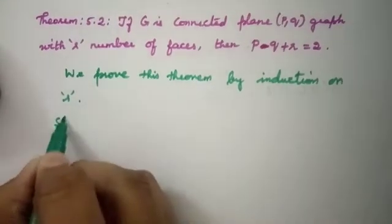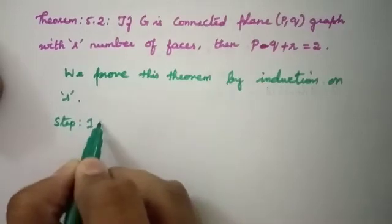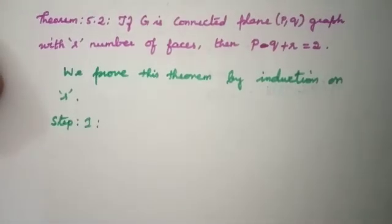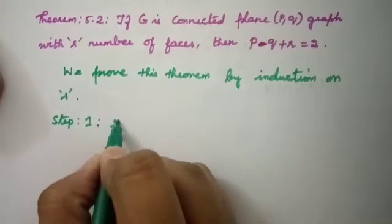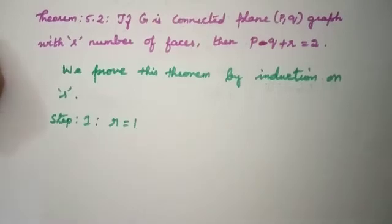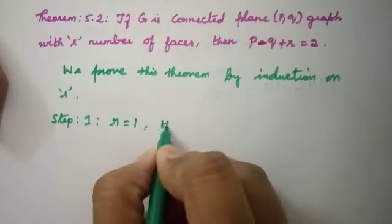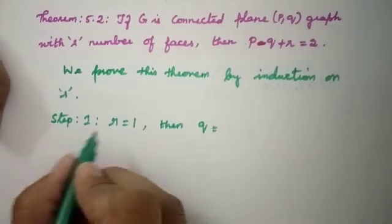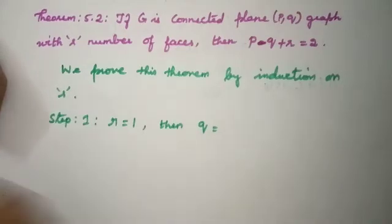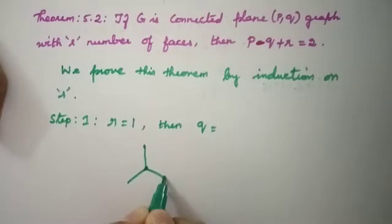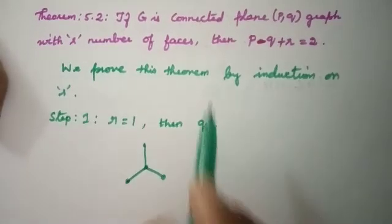Using the induction method, the first step is to check the initial condition. The initial condition is R equals 1. If R equals 1, then the number of edges corresponds to one face. It must be an acyclic connected graph — that is, a tree.